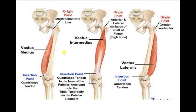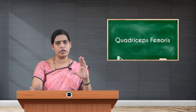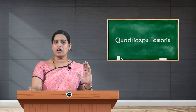Moving on to the origins of the vasti muscles: vastus medialis takes its origin from the medial lip of the linea aspera and the medial surface of the shaft of the femur. Vastus lateralis originates from the lateral lip of the linea aspera, the lateral surface of the shaft of the femur, and also from the root of the greater trochanter. Vastus intermedius takes its origin from the upper two thirds of the anterior surface of the shaft of the femur.